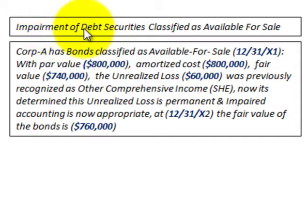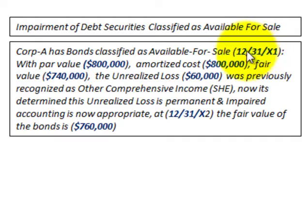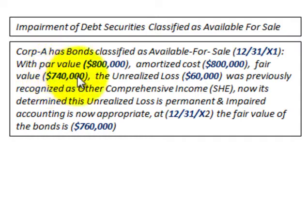We're going to be going over impairment of debt securities classified as available-for-sale securities. Corporation A has bonds classified as available for sale. At the reporting period 12-31-X1, they have a par value of $800,000, an amortized cost of $800,000, and a fair value of $740,000. Based on that, we have an unrealized loss of $60,000.